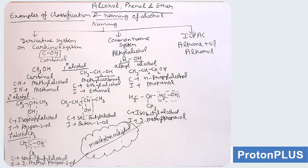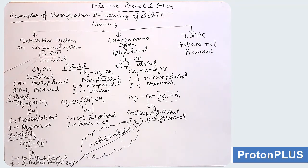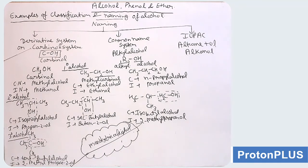Now we will take examples of classification and naming of alcohol. Naming of alcohol can be done in three ways: first, the derivative system or carbinol system — this has historical importance; second is the common name system; and third is IUPAC. In the derivative or carbinol system, the carbon and OH are both included and named as carbinol. Common name system: ROH where R is alkyl, giving alkyl alcohol. IUPAC: it is alkane plus -ol (removing the terminal 'e' for monohydric alcohol), giving alkanol.